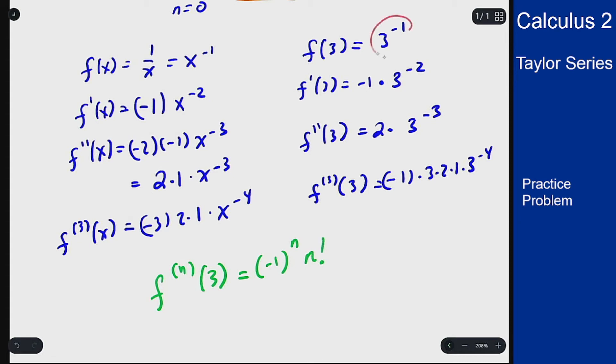And we can see over here on the end I will get 3 to the power of negative n plus 1 because for the 0th derivative I get minus 1, for the first I get minus 2, for the second I get minus 3. So it's going to be 3 to the negative n plus 1.